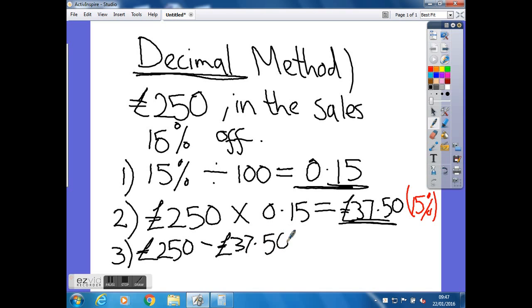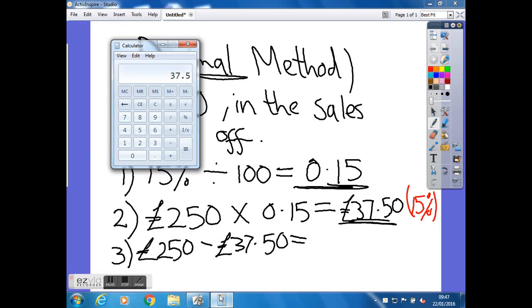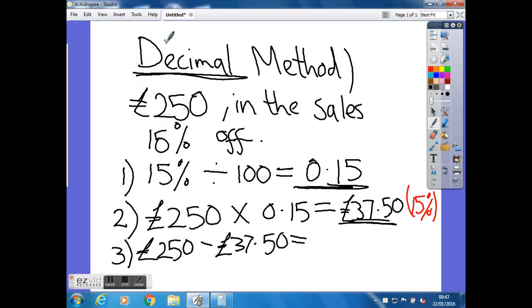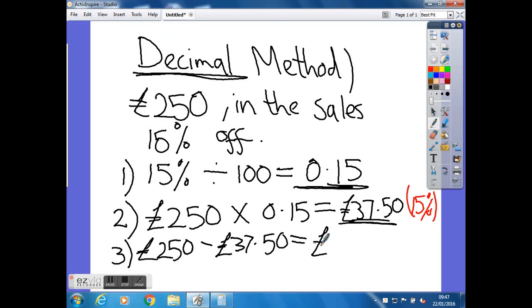And that should give us the new reduced price. So once again I'll get the calculator up for that. 250 take away 37.50, so that equals 212.50. So I'll write that on, £212.50, and that now is our final answer.